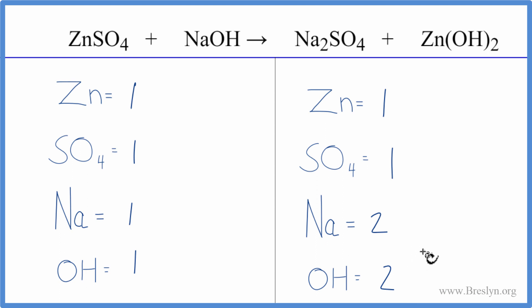Now when we look at the equation, it's pretty simple to balance. We just need to double the Na and the OH, so we have two of each of these to balance that.